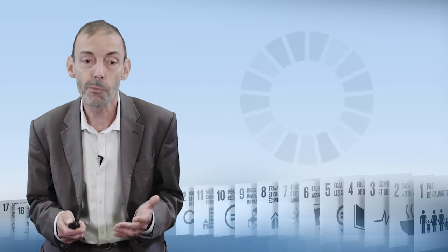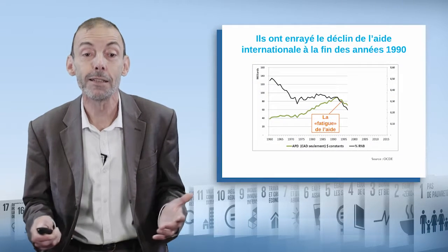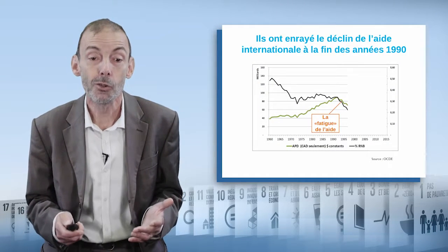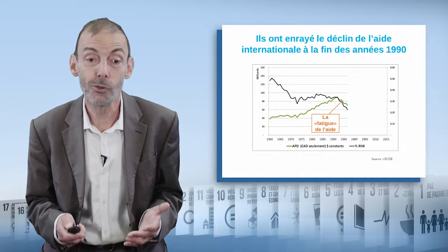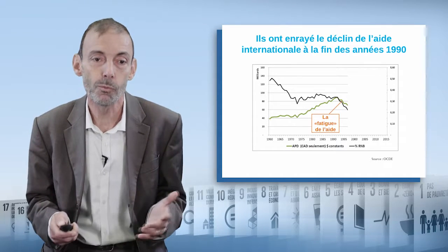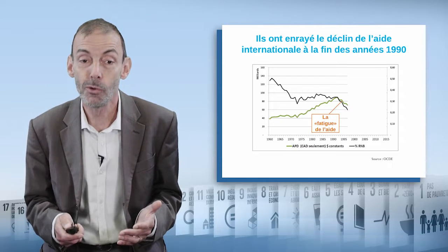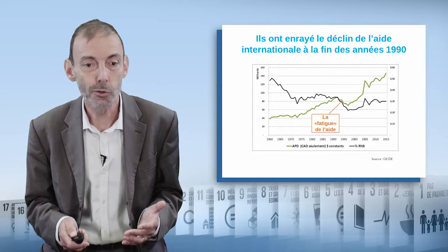There was a clear reason for that. This idea of development goals had emerged at the end of the 90s, because the 1990s, after the Berlin Wall fell, resulted in a sharp drop in international aid. It was called aid fatigue. And that is why the MDGs were very much associated with international aid.